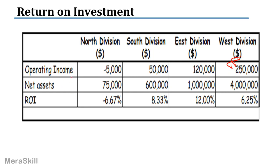But then let us look at the net assets — the investment made in order to generate this income. North division has 75,000 in net assets; South division has 600,000; East division has 1 million; and West division has 4 million. So while South division made a profit of 50,000, they employed net assets of 600,000. East division made 120,000 but also employed significant net assets. To make it comparable, we now look at return on investment.